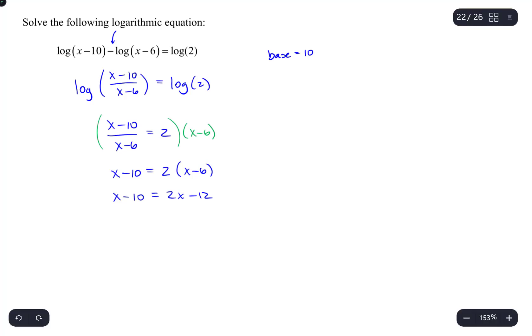To get x by itself, next, let's say we'll subtract x from both sides. And that leaves me with negative 10 equals x minus 12.